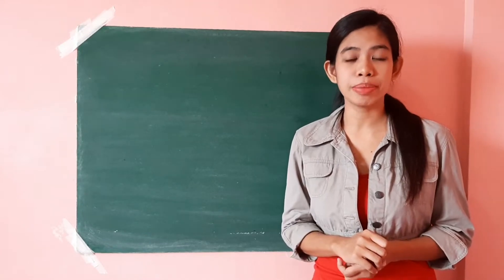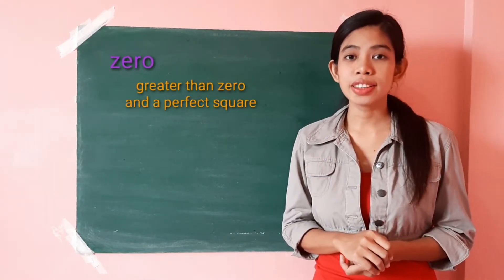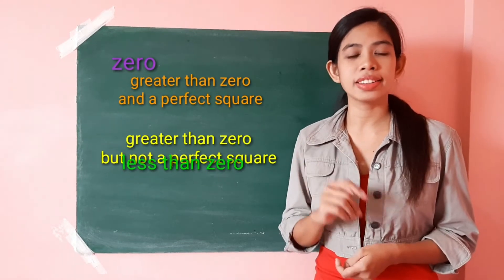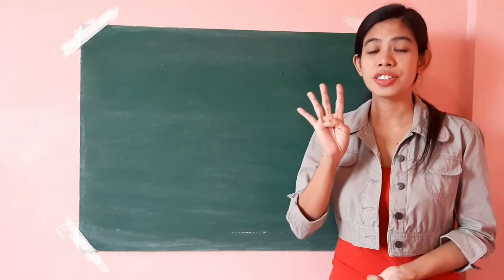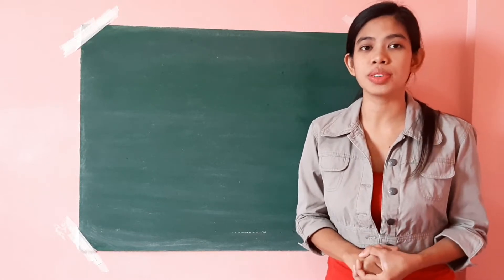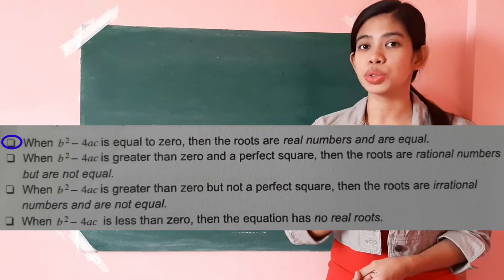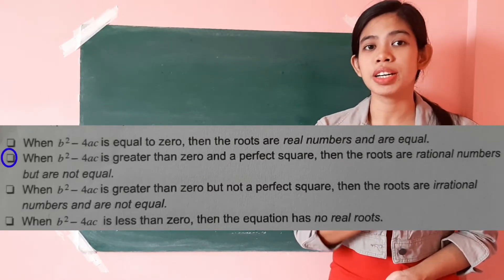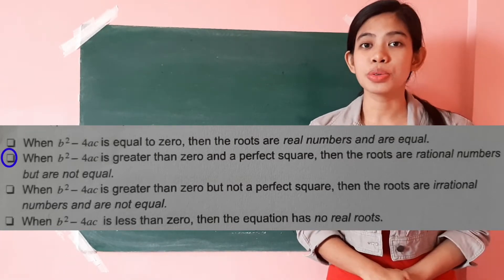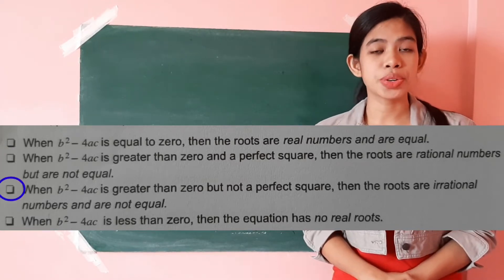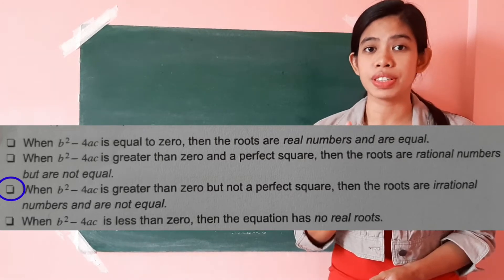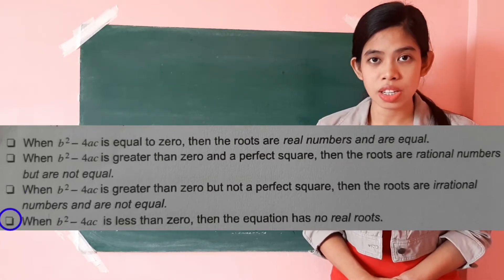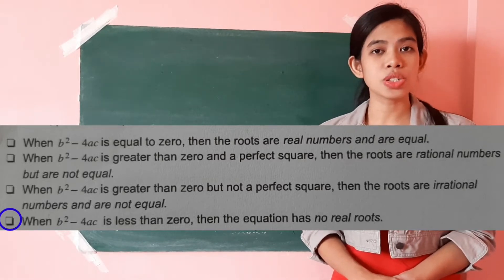The value of the discriminant b squared minus 4ac could be equal to 0; greater than 0 and a perfect square; greater than 0 but not a perfect square; or less than 0, a negative integer. There are four conditions. When b squared minus 4ac equals 0, the roots are real numbers and are equal. When it is greater than 0 and a perfect square, the roots are rational numbers but are not equal. When greater than 0 but not a perfect square, the roots are irrational numbers and are not equal. And when less than 0, the equation has no real roots.